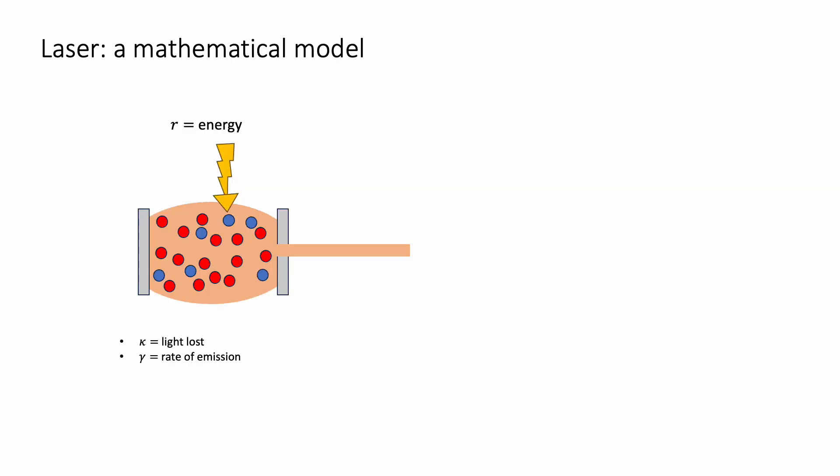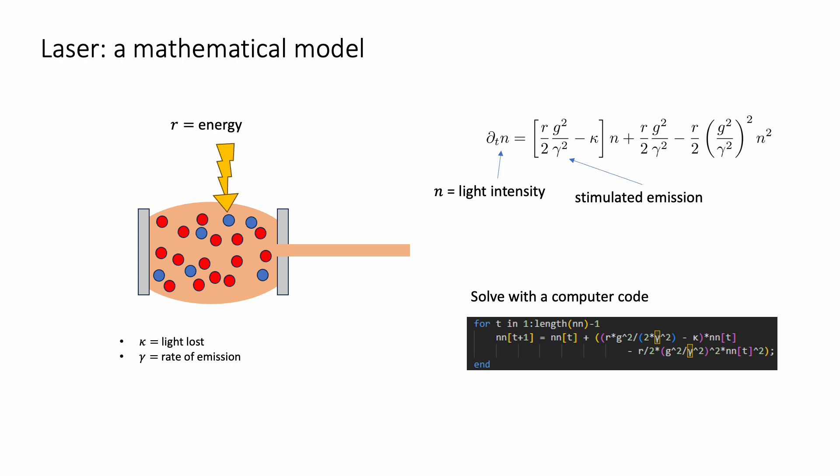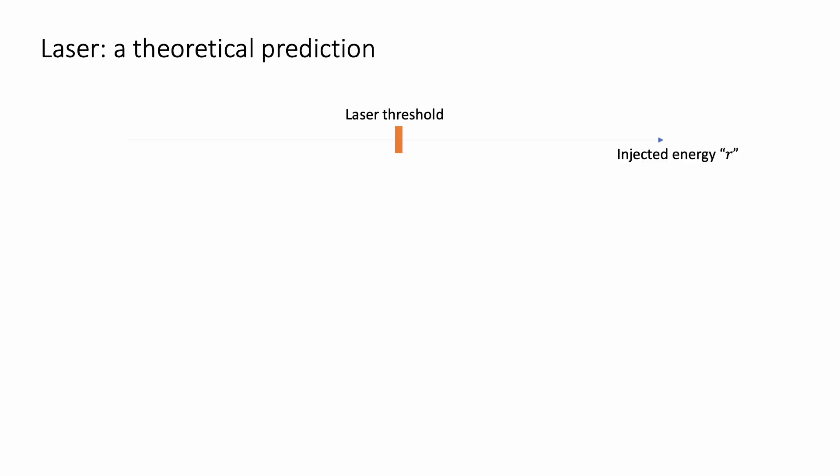Let's now construct a mathematical model of the laser. We first define the mathematical variables that represent physical quantities, such as R, for the injected energy, or kappa, for the light escaping from other directions. In terms of these variables, laser operation can be described by the following equation. It describes how the intensity of light, n, changes in time. The principle of stimulated emission is represented here by the first term in the square brackets. One way to solve this equation is to translate it in a small computer program, as the one shown here.